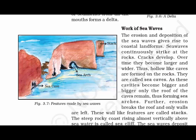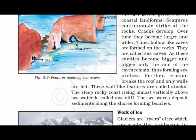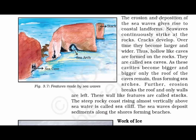Now let's read about the work of sea waves. The erosion and deposition of sea waves helps in forming coastal landforms, that is the beach. Sea waves continuously strike at the rock — you can see small arches and sea caves formed in the rock due to the continuous strike of the sea waves. Over time, they become larger and wider, forming hollow-like caves called sea caves. At some places, sea arches are formed, and there is another type of formation called the stack.